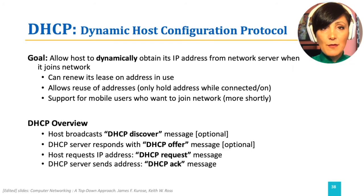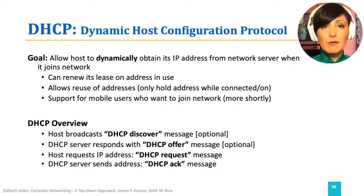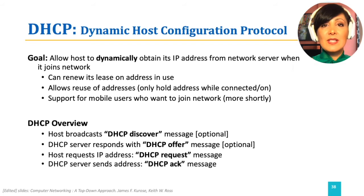The host broadcasts a DHCP discover message, meaning it sends the request to everyone in the network simply because it does not know whom to send it to. The broadcast happens by setting the destination IP address to 255.255.255.255. Since it still does not have an IP address of its own, it sends the message introducing itself as the source with the host's address of 0.0.0.0.